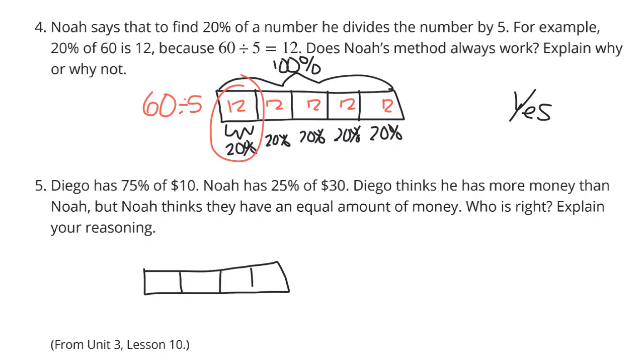1, 2, 3 fourths. And the 75% is going to be 3 of these fourths. Noah, meanwhile, has 25% of 30. So if we take a look at our bar here, again, we're going to break into fourths. But this time, we have just one of the fourths to be 25%.